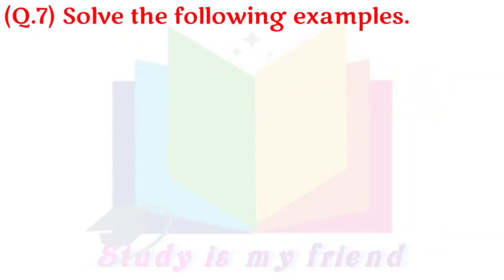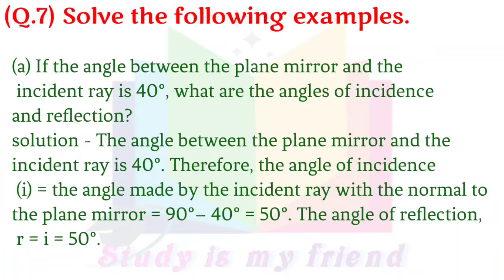Question 7: Solve the following examples. A. If the angle between the plane mirror and the incident ray is 40 degrees, what are the angles of incidence and reflection? Answer: The angle of incidence (i) equals 90 degrees minus 40 degrees, which equals 50 degrees. The angle of reflection (R) equals i, which equals 50 degrees.